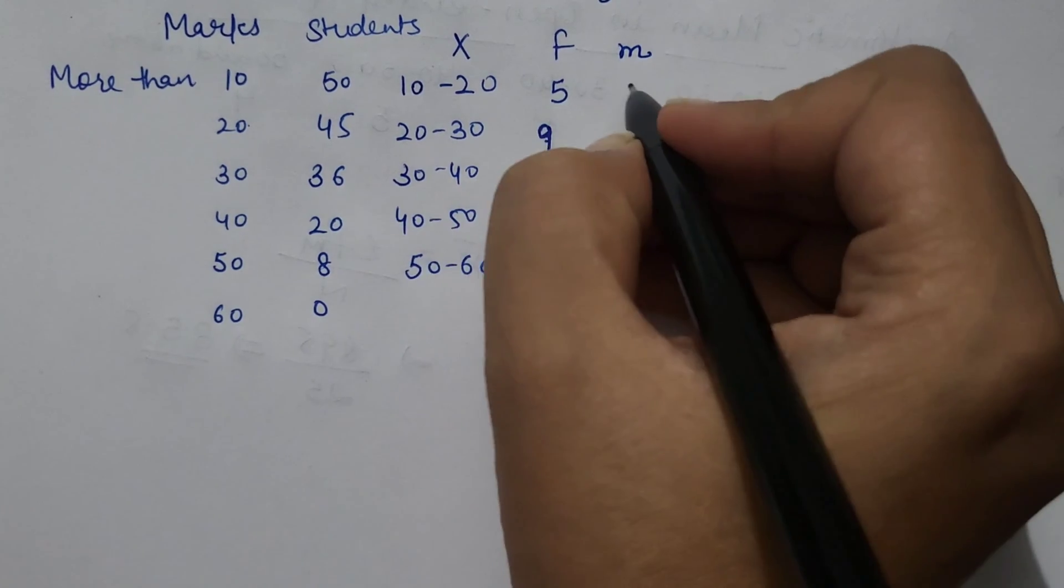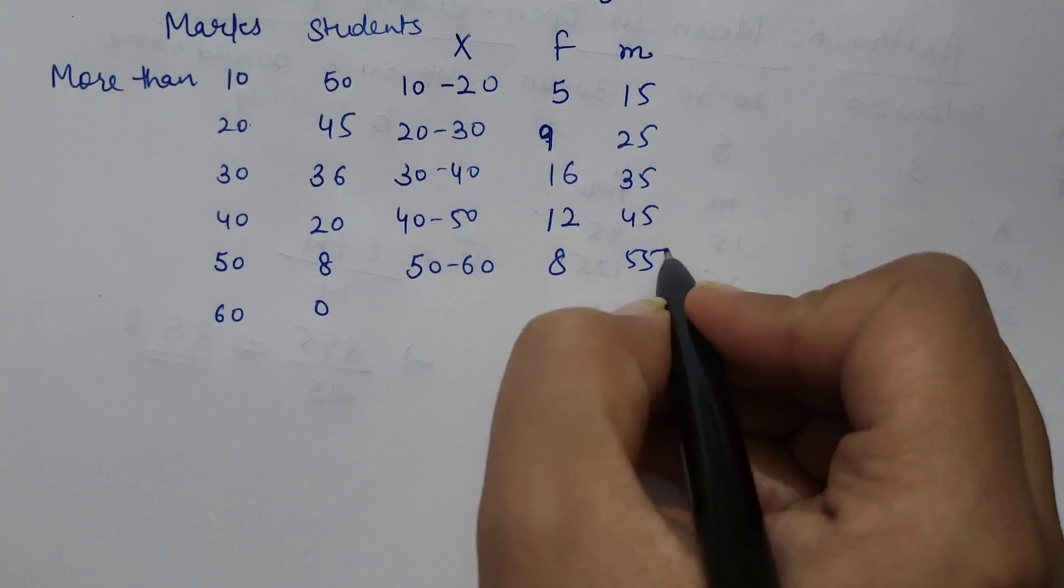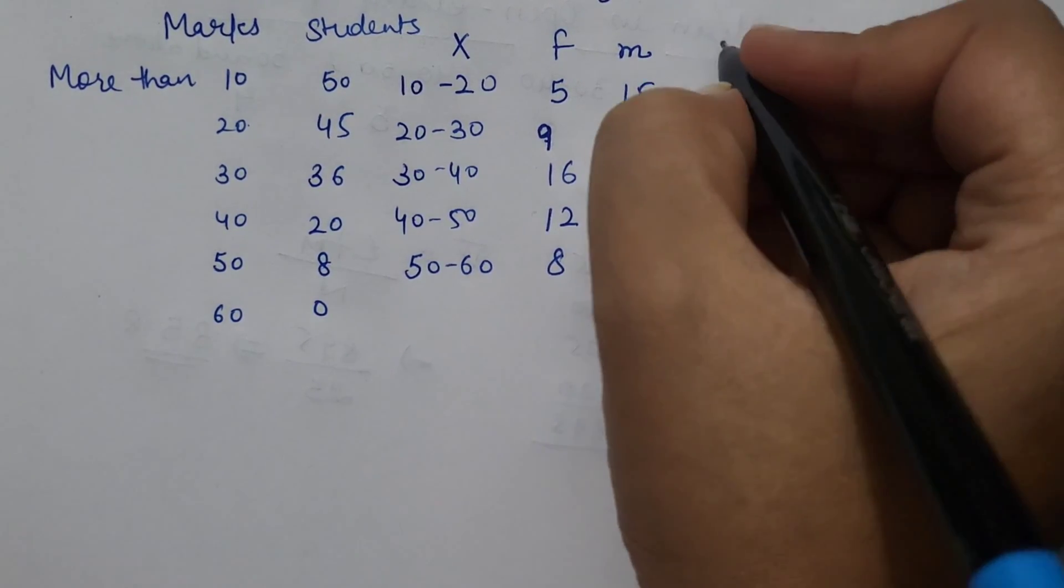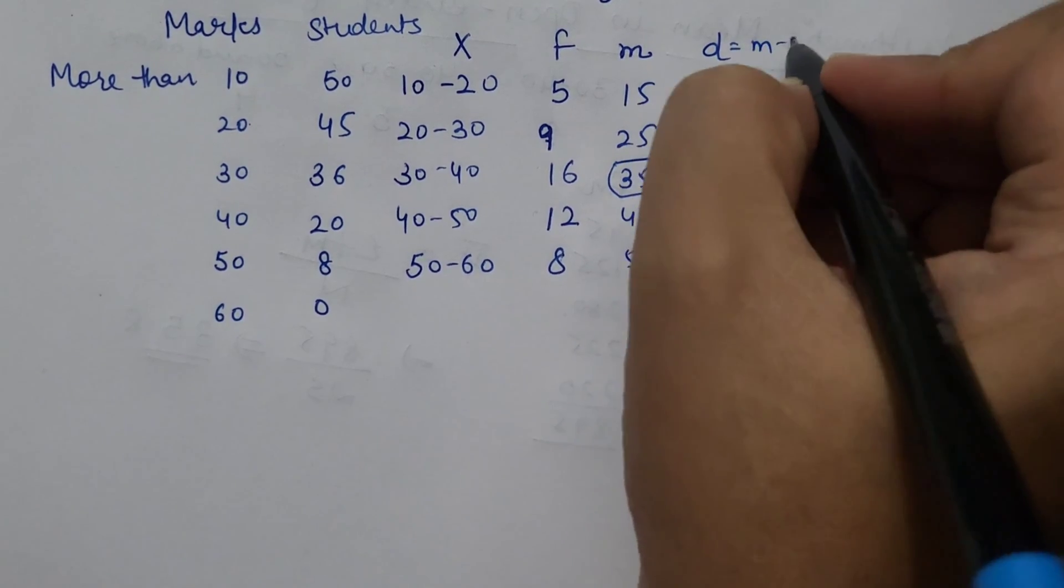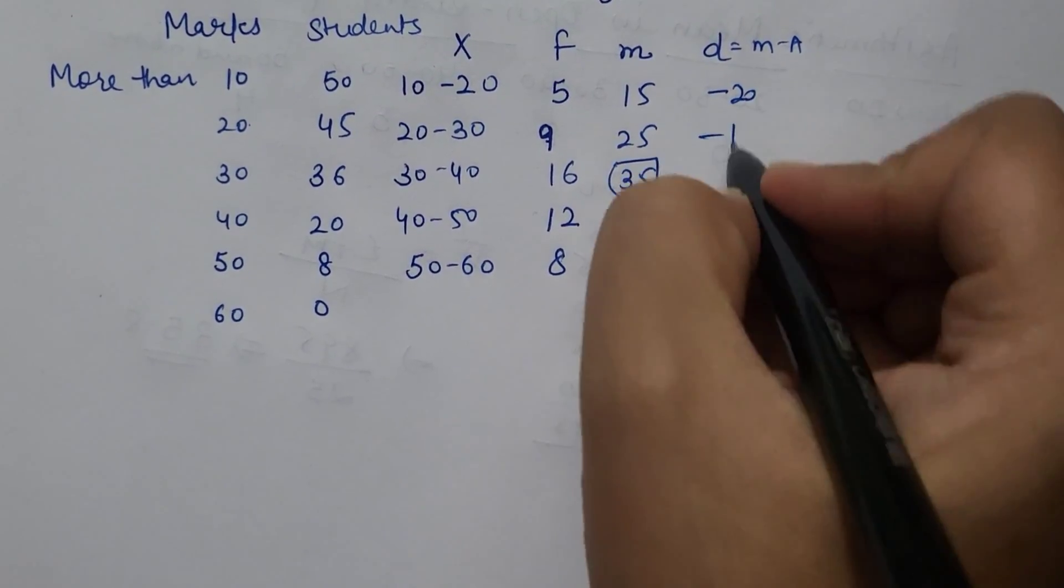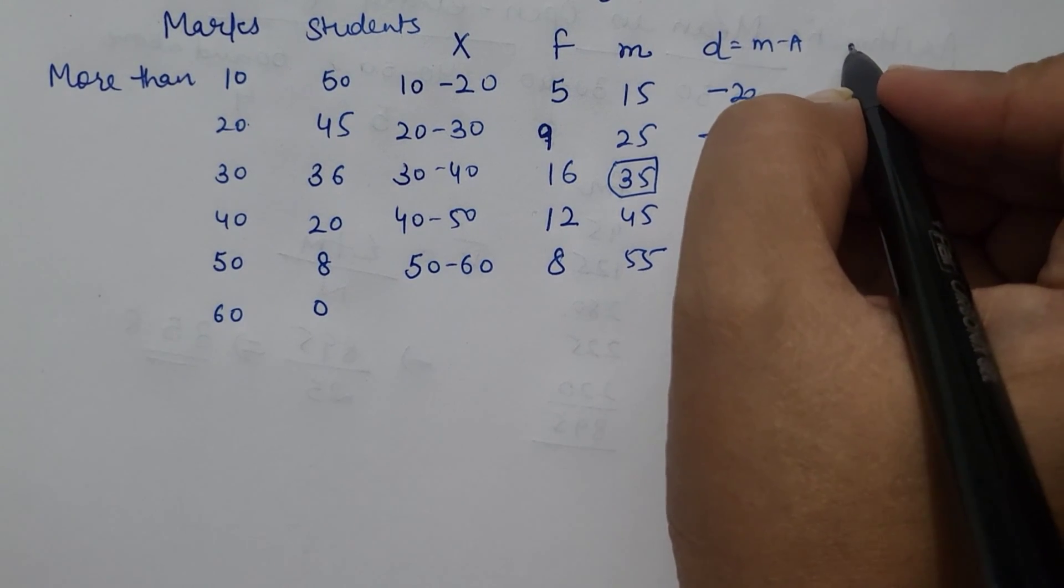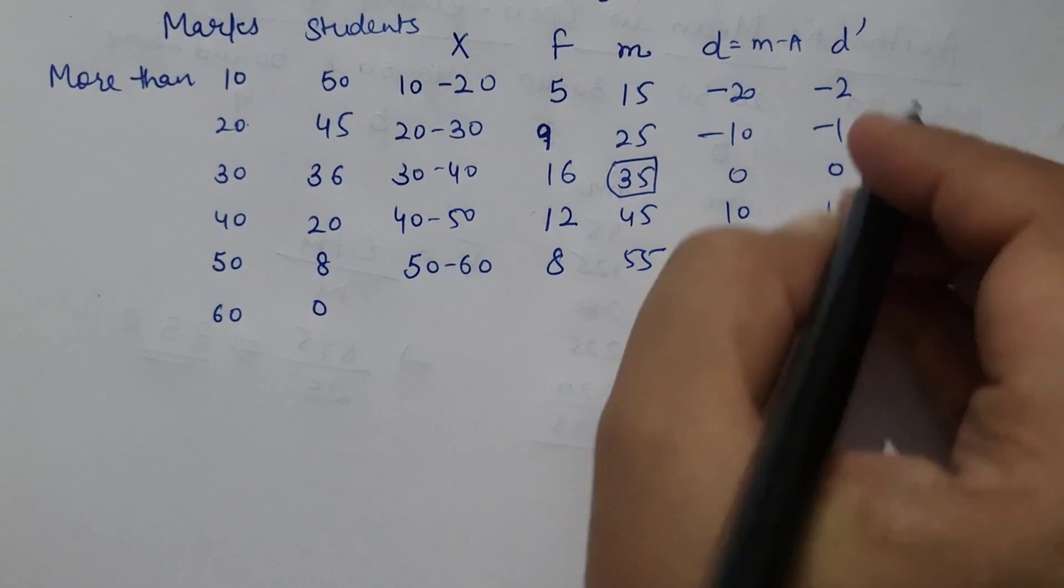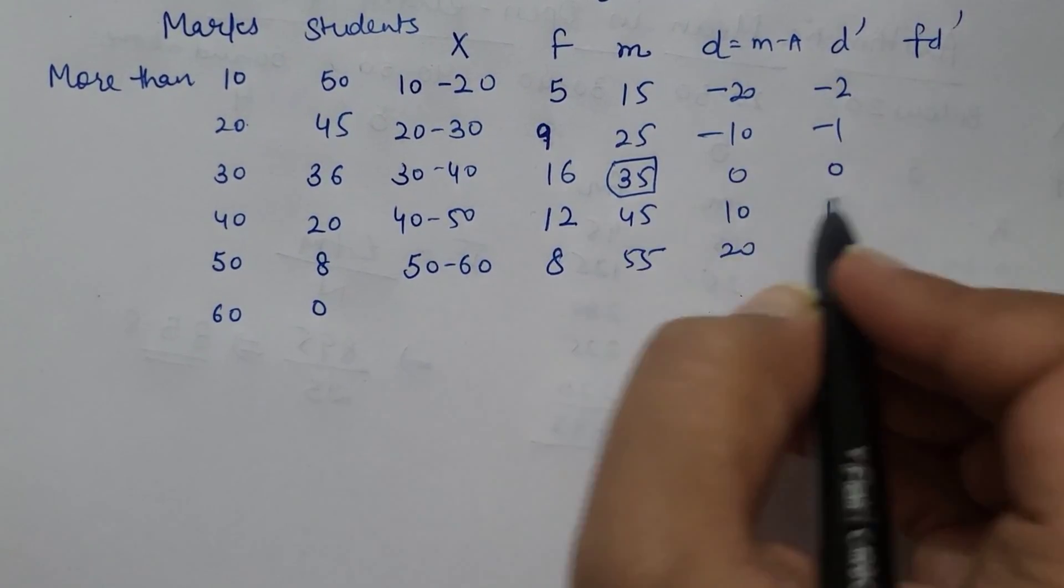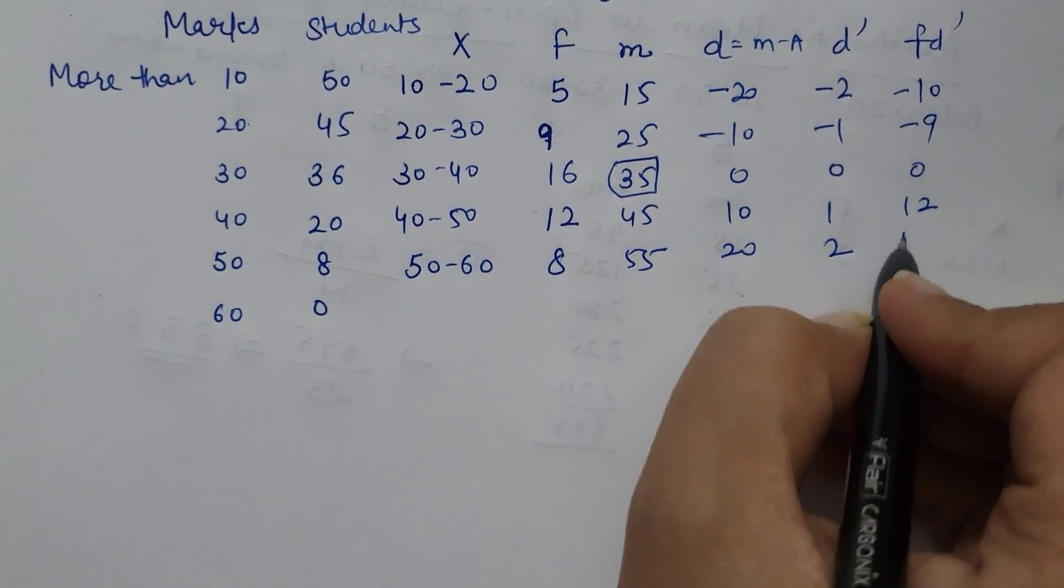We can take deviations. M minus A, minus 20, 10, 0, 10, and 20. So D dash can be calculated as 0 can be eliminated here. So FD dash. Minus 10, minus 9, 12, 16.